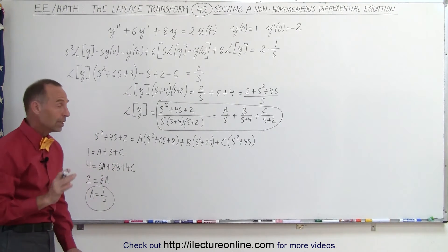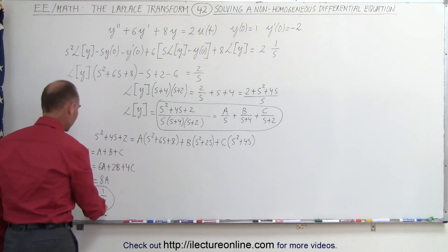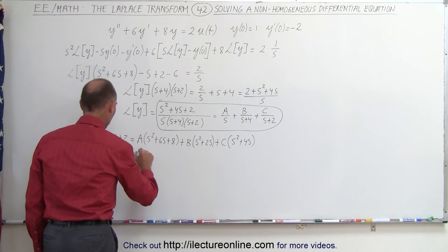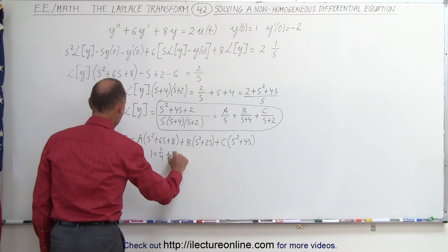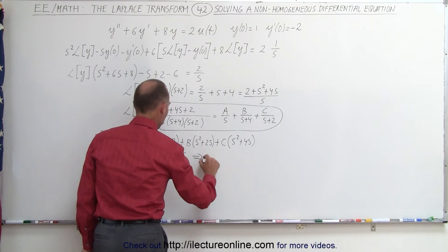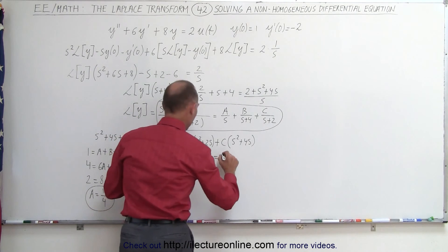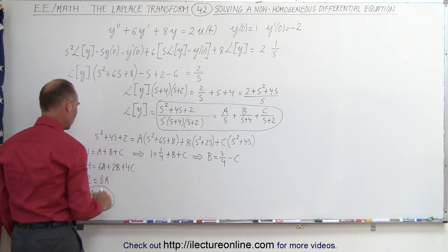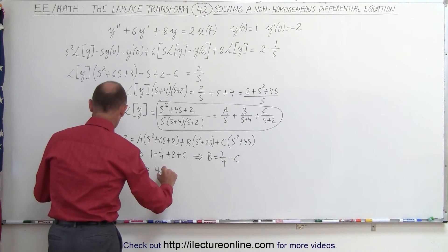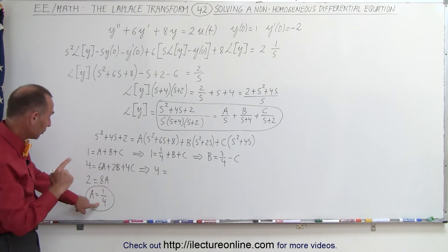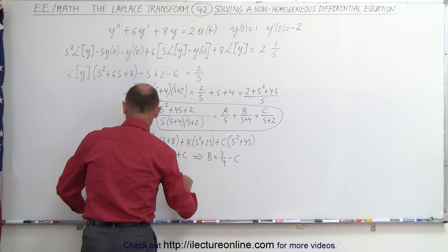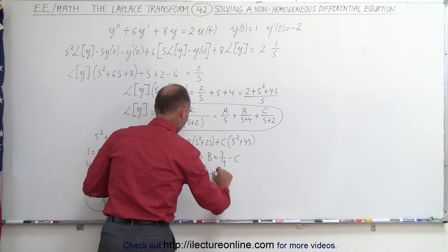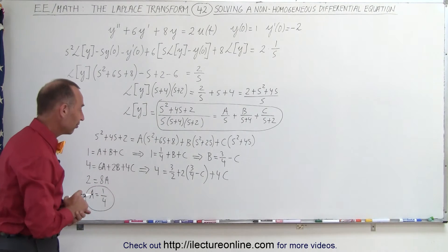We already have A equals one quarter. Now we solve for B and C. Substituting A into the first equation gives one equals one quarter plus B plus C, so B equals three quarters minus C. Substituting A equals one quarter and B equals three quarters minus C into the middle equation: four equals six times one quarter, which is three halves, plus two times three quarters minus C, plus four C.